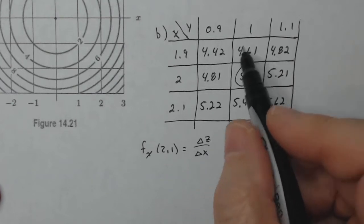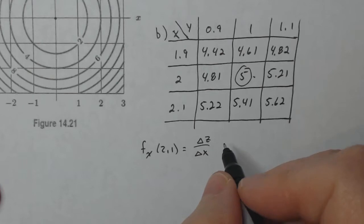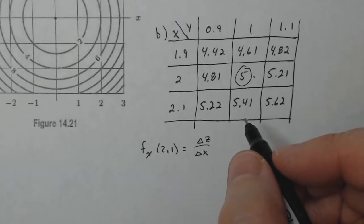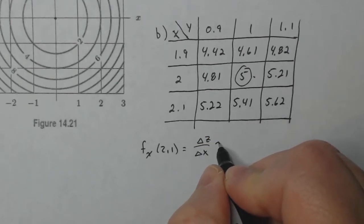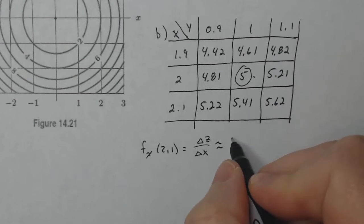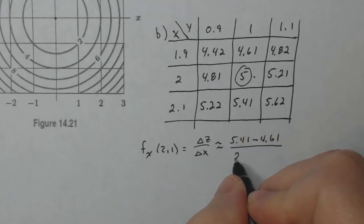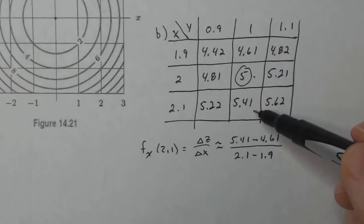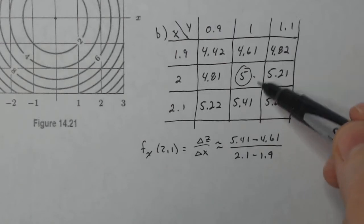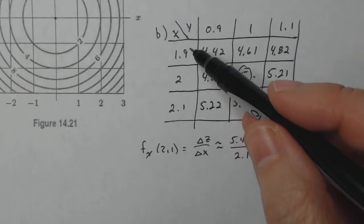So here I'm going to do a central difference quotient. So this one's in the center. When you use a table, it's probably a way better accurate result for your estimate. So this is going to be approximately, let's see, 5.41 minus 4.61 divided by 2.1 minus 1.9.